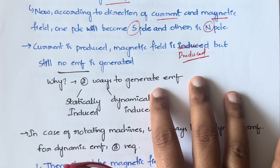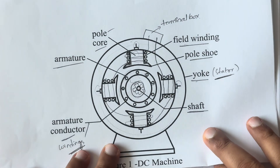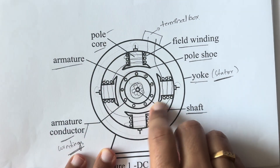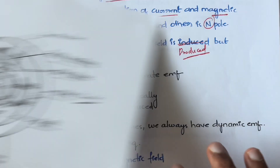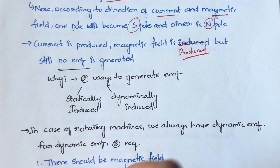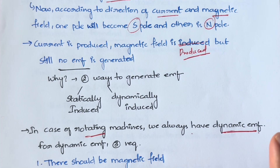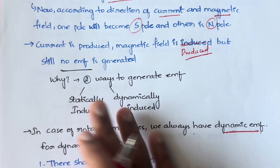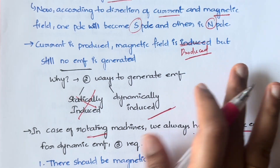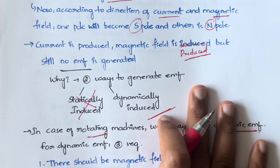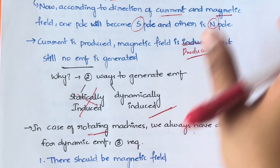In case of rotating machines — and the DC machine is a rotating machine, with the armature rotating in the center — we will always have dynamically induced EMF. We will not have statically induced EMF. So to generate dynamically induced EMF, you have three requirements.